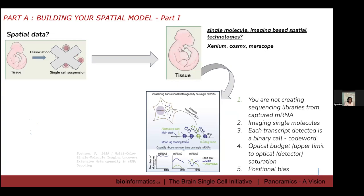Now you have your single-molecule imaging-based spatial technologies. So you do Xenium, you have CosMx, you have MERSCOPE, and then you have a whole plethora of very interesting name-sounding technologies as well. In this case, you're not creating libraries from captured mRNA. This is basically just pure images of your single molecules. So each transcript that you detect is a binary call based on your decoded code width.